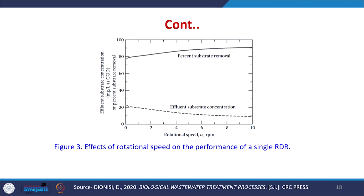We can see the effects of rotational speed on the performance of a single RDR: at rotational speeds from 2 to 10 RPM, the percentage of substrate removal is increasing and the effluent substrate concentration is decreasing. At around 6 RPM, the difference is not much. We can optimize at any condition and perform such studies on newly acquired RDRs; once we have the performance data, we can set the required rotational speed.